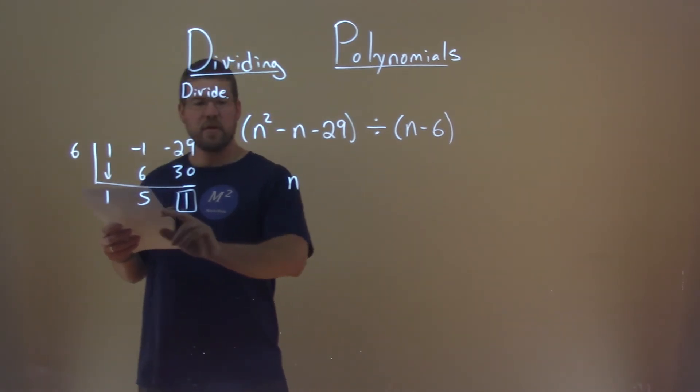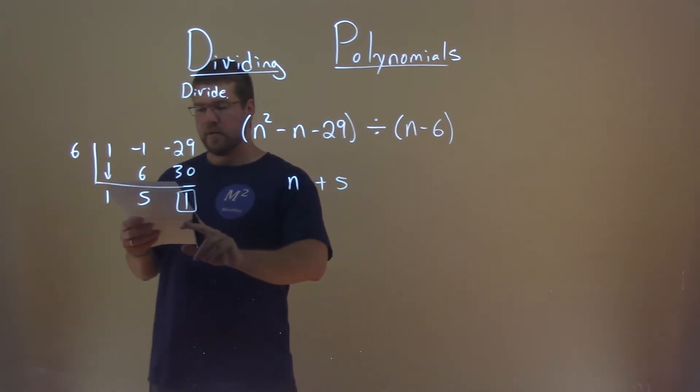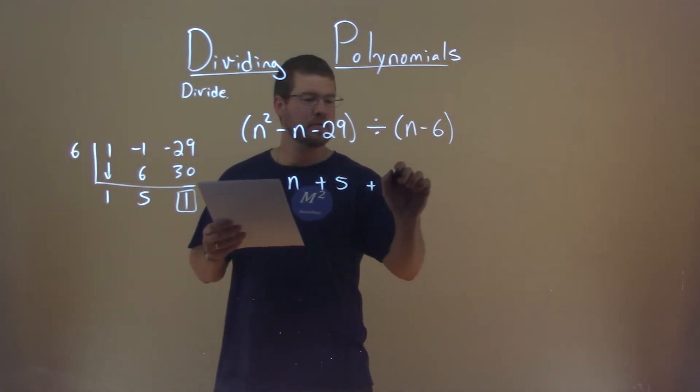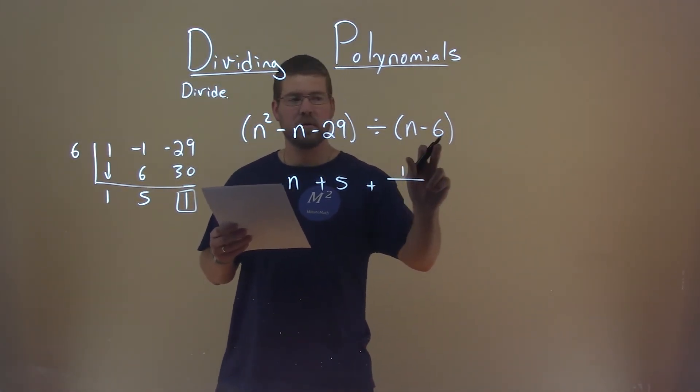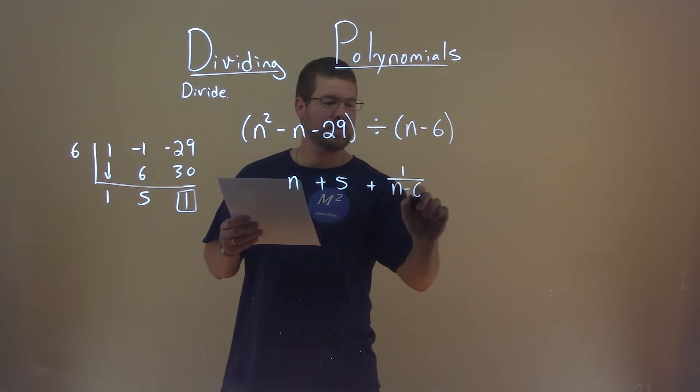Then we're going to add a 5 plus a remainder, which is 1, over what's left over here, n minus 6.